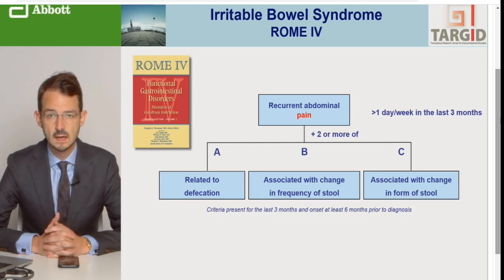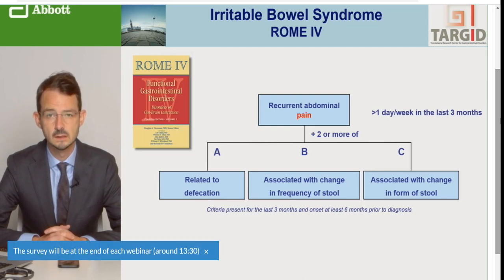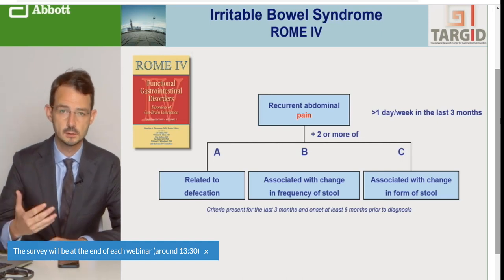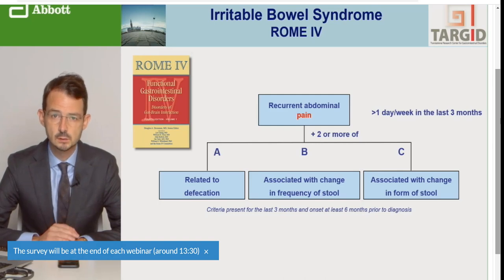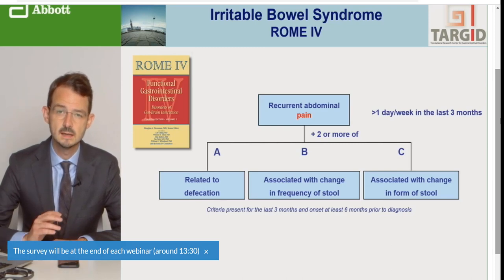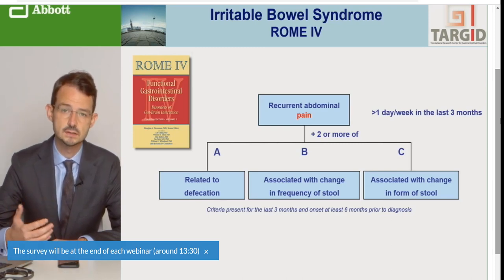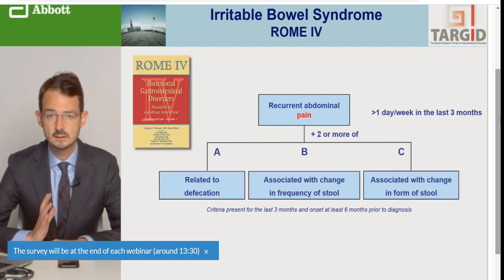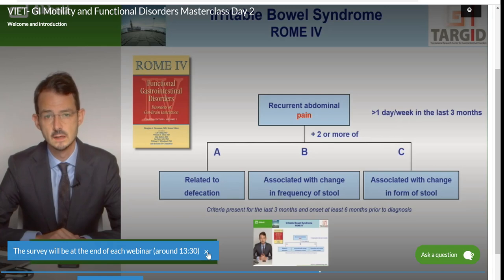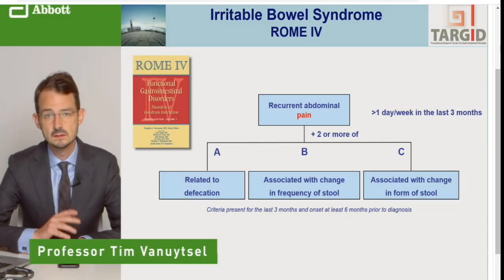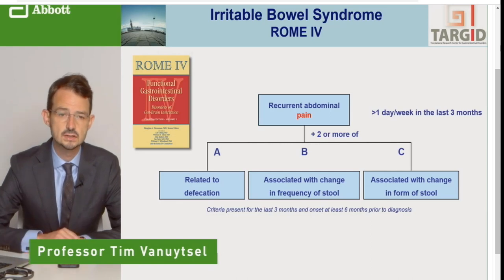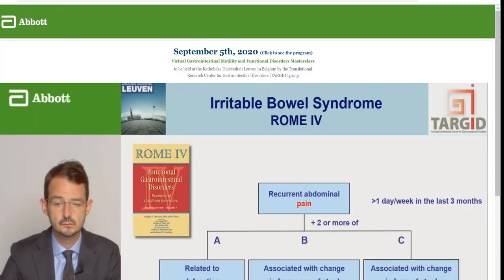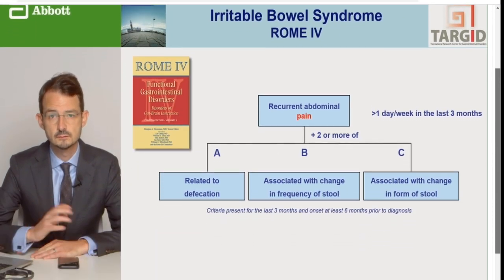Tiêu chuẩn này cần phải được hoàn thành thì mới chẩn đoán IBS. Sau đó chúng ta sẽ có thêm 2 tiêu chí nữa để hoàn thành IBS. Nó liên quan tới cái đặc điểm của phân. Thứ nhất, đó là liên quan giữa đau bụng cũng như động tác đi cầu - một số bệnh nhân sau khi đi cầu xong thì họ đỡ đau bụng, tuy nhiên có một số bệnh nhân nói rằng thậm chí sau khi đi cầu xong thì đau lại nhiều hơn. Thứ 2 là mối liên quan với sự thay đổi tần suất đi cầu, hoặc là thay đổi về hình thức của phân, thí dụ như phân lỏng, phân đặc.